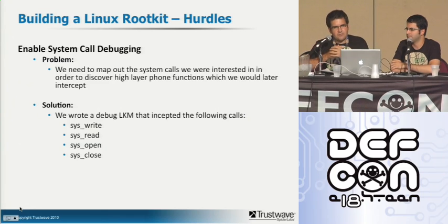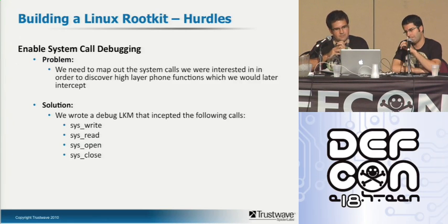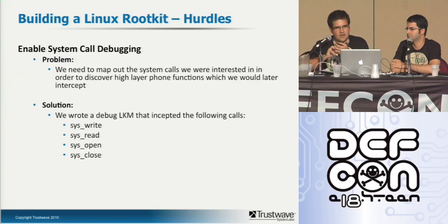At this point we had successfully loaded our module into the HTC Legend's kernel. Next we needed to understand which higher-layer phone functions to intercept. Android has hundreds of APIs — thousands — but these all interface with a set of 255 to 300 system calls. The main ones we targeted were syswrite, sysread, sysopen, and sysclose. These are the kernel functions that perform all read, write, open, and close operations. By determining the arguments passed to those system calls, we can find the specific events we want to hijack.